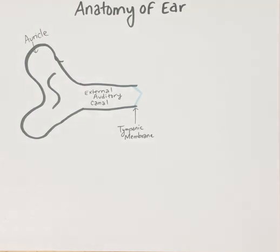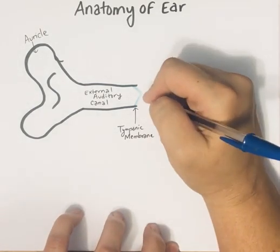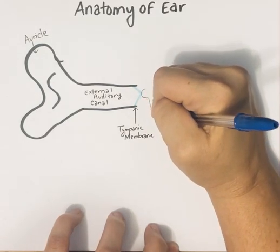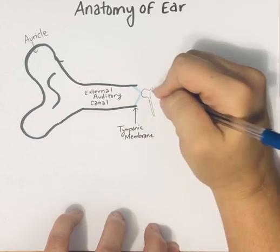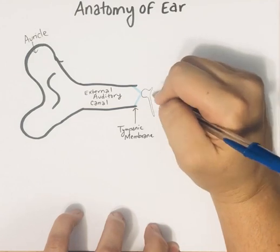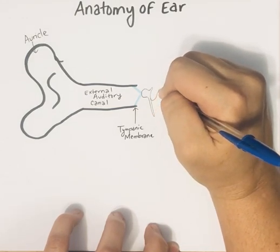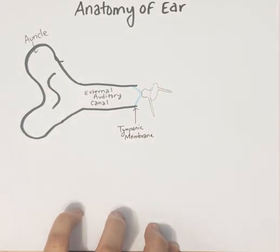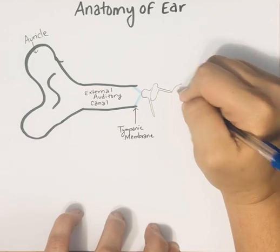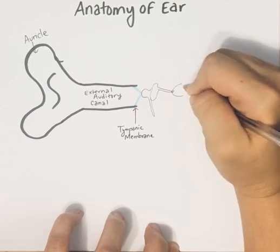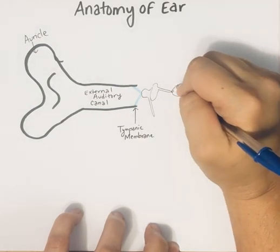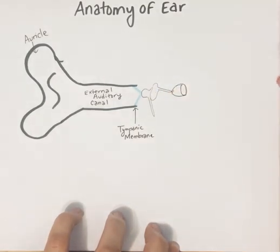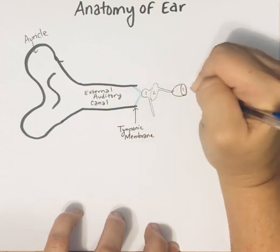There are three auditory ossicles and they always go in a certain order. The one that touches the tympanic membrane and looks like a hammer is called the malleus — the malleus is always first. The malleus then vibrates the next auditory ossicle known as the incus, or the anvil. Then it vibrates a third auditory ossicle.